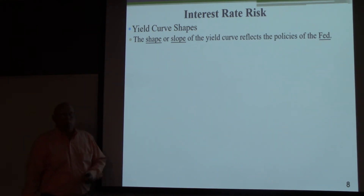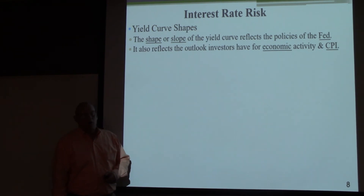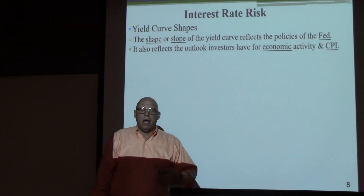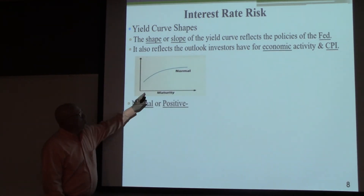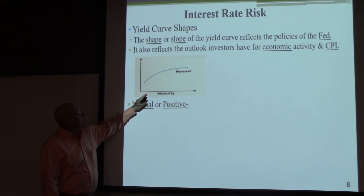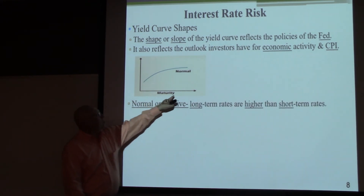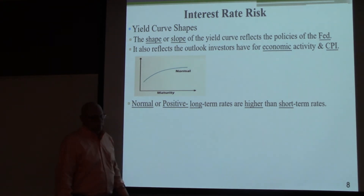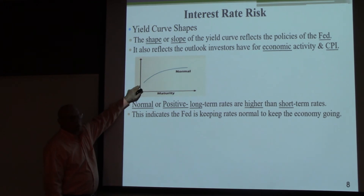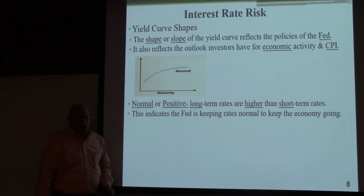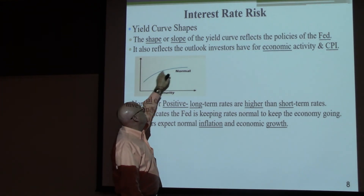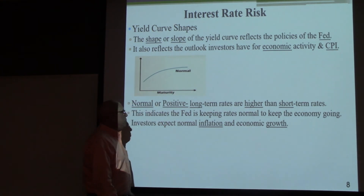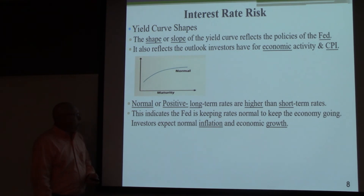The yield curve has two main shapes, and its slope reflects Fed policy and investor outlook for economic activity and CPI inflation. A normal or positive-sloped yield curve — seen about 90-95% of the time — shows long-term rates higher than short-term rates. This indicates the Fed is keeping short-term rates low to normal to keep the economy going, investors expect normal inflation, and they expect decent economic growth.